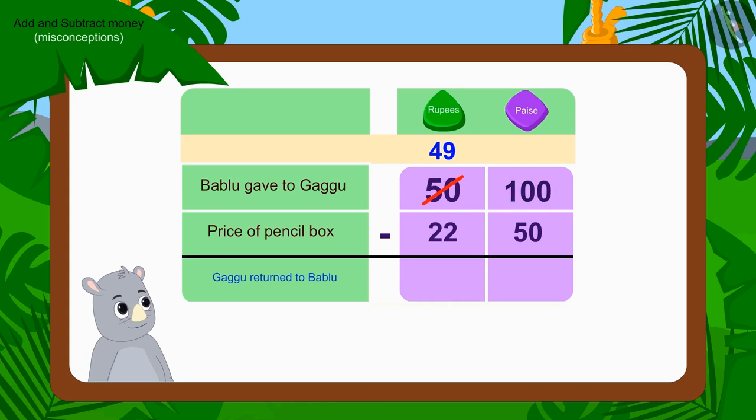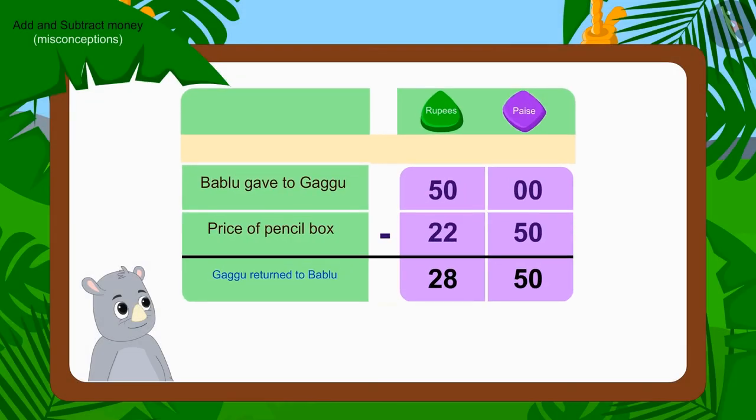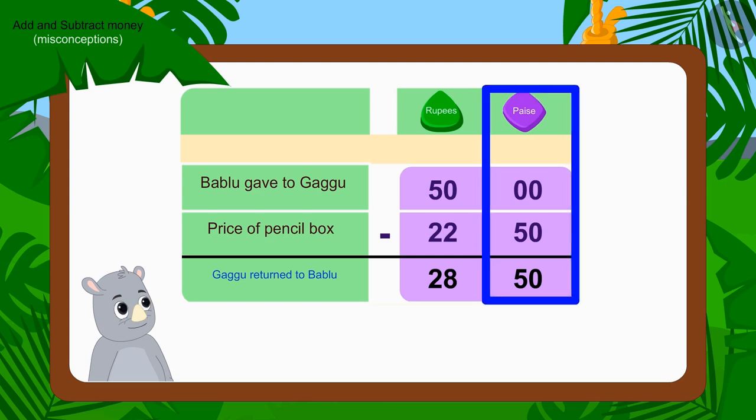Now, out of hundred paise, how much money is left after deducting fifty paise? Fifty paise. Children, if we look at the subtraction done by Gaggu, we will find that Gaggu also used the borrowing process like us. But he forgot to cut fifty rupees and write forty-nine rupees.